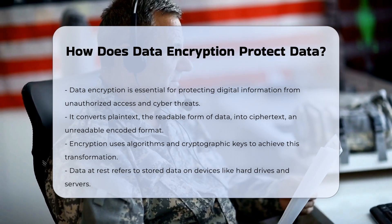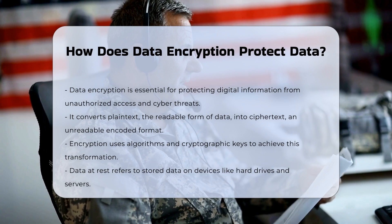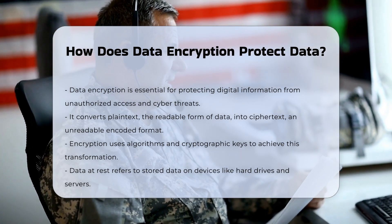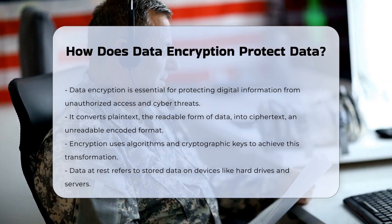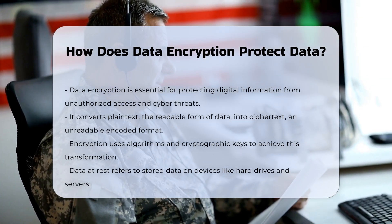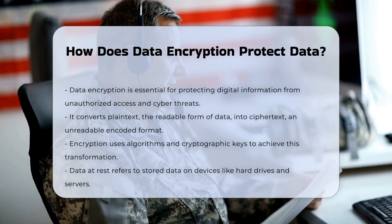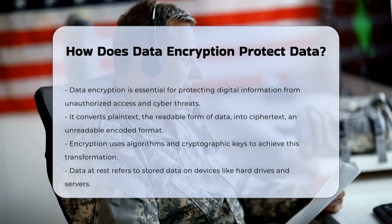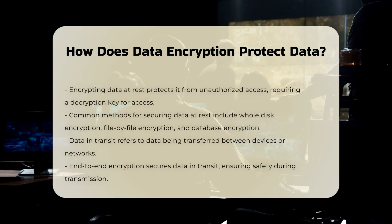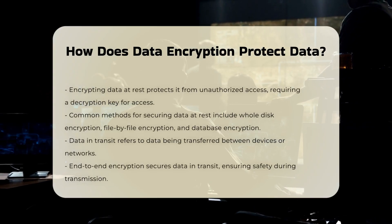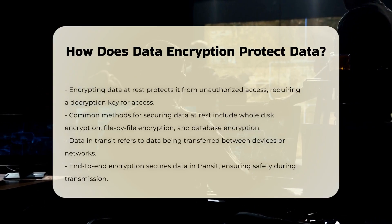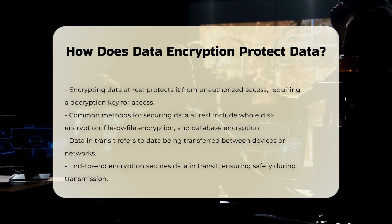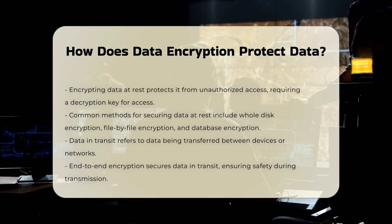Protecting data at rest. Data at rest refers to data stored on devices such as hard drives, servers, or databases. Encrypting this data ensures that even if the storage medium is accessed by unauthorized parties, the data remains inaccessible without the decryption key. Whole disk encryption, file-by-file encryption, and database encryption are common methods used to secure data at rest.